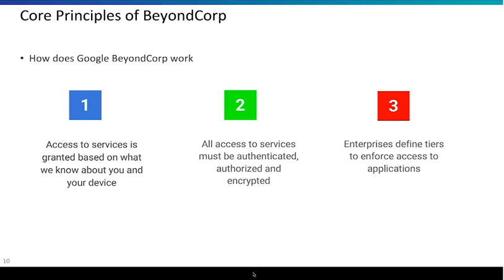The third principle, which is unique to Google but we're pushing as a best practice, is this idea that most enterprises don't have 15 or 20 applications — they have thousands and thousands of applications. So how do you get to a model where you can scale all these BeyondCorp concepts to applications? You don't want a team's full-time job to be clicking through every app deployed and figuring out if it's highly sensitive or not. So we've simplified our model into four key categories: things that are highly sensitive, mostly sensitive, not really sensitive, and not sensitive at all.